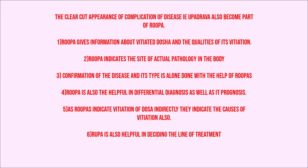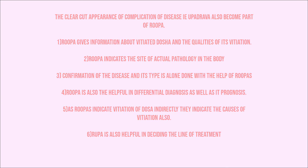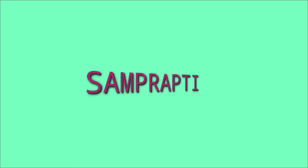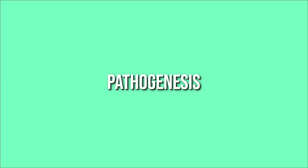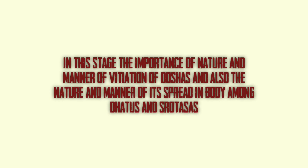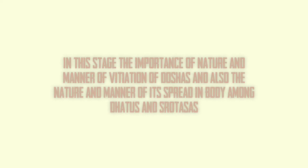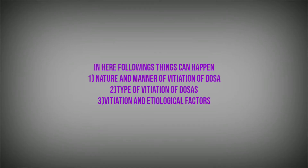Rupa is also helpful in deciding the line of treatment. The third one is Samprapti — Pathogenesis. In this stage, the importance of the nature and manner of vitiation of dosha, and also the nature and manner of its spread in the body among dhatus and srothas, is described. This includes the nature and manner of vitiation of dosha, the type of vitiation of dosha, and vitiation in etiological factors.